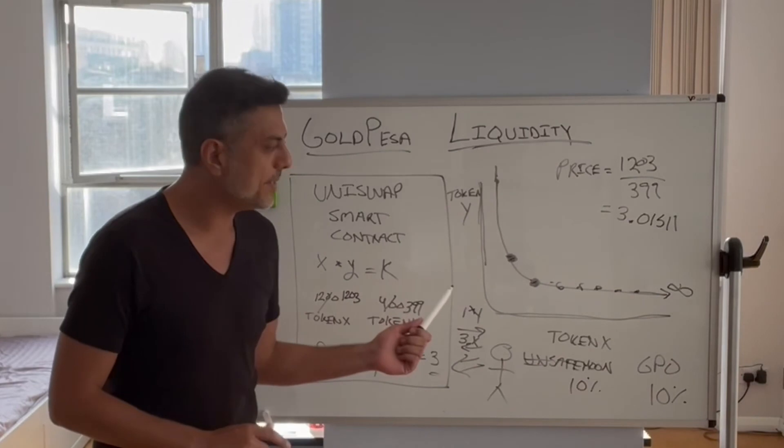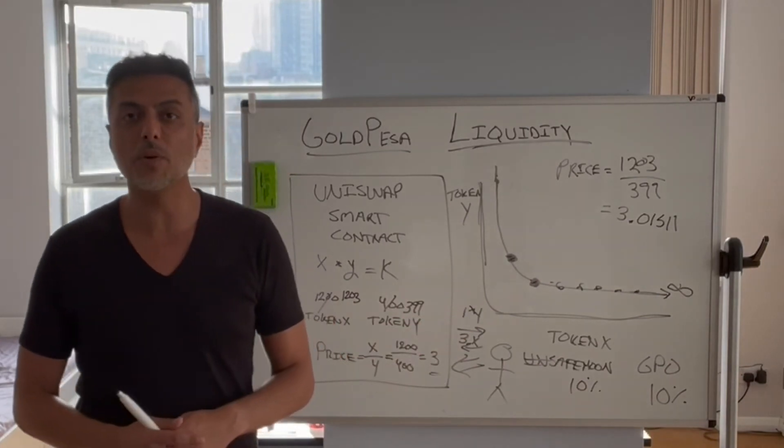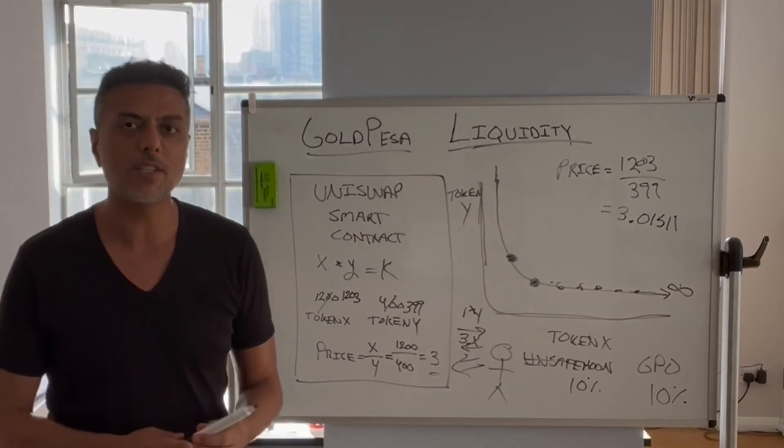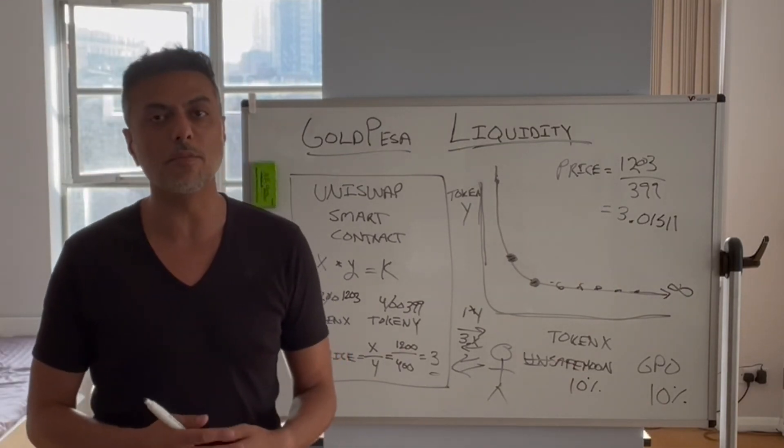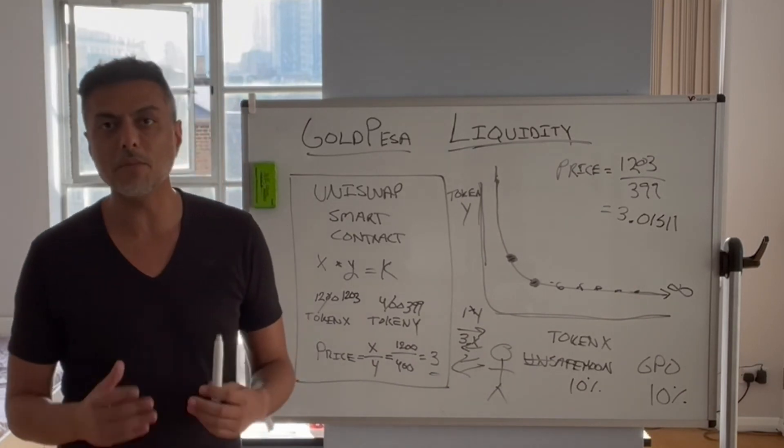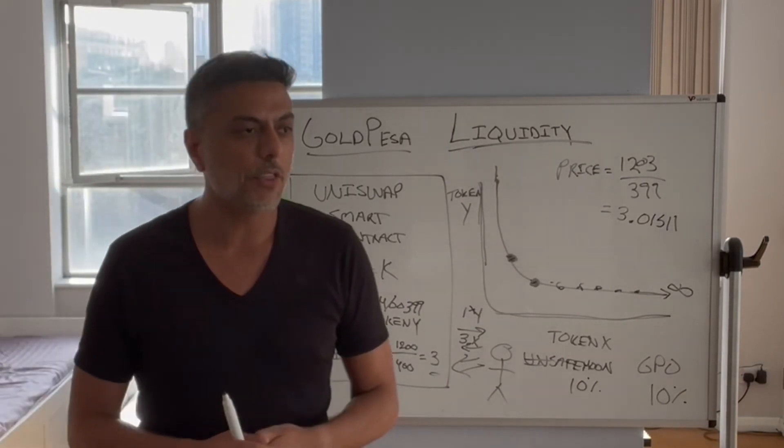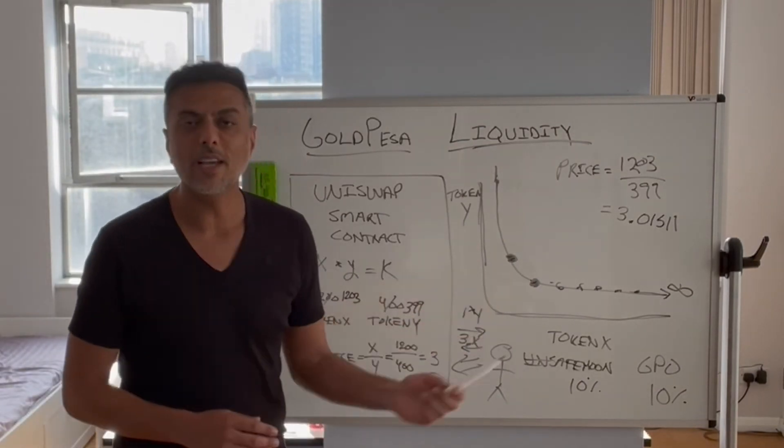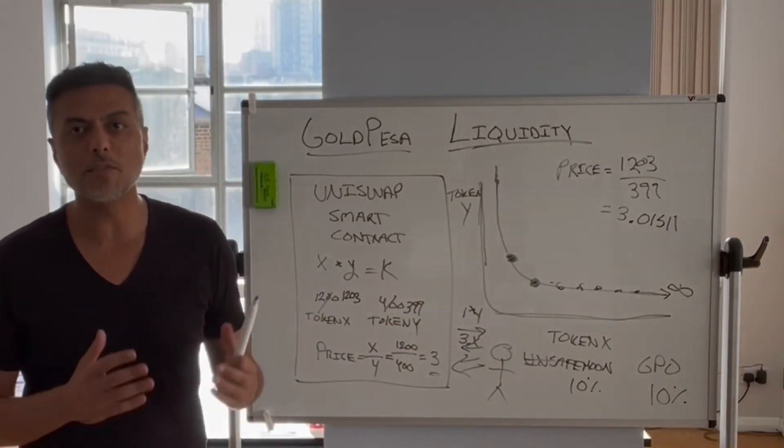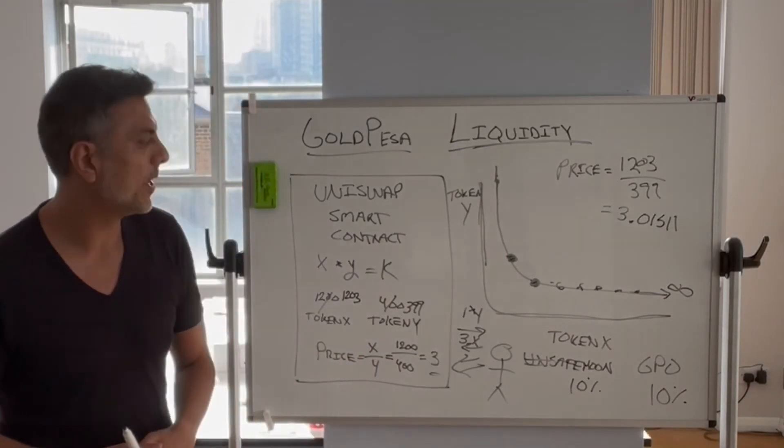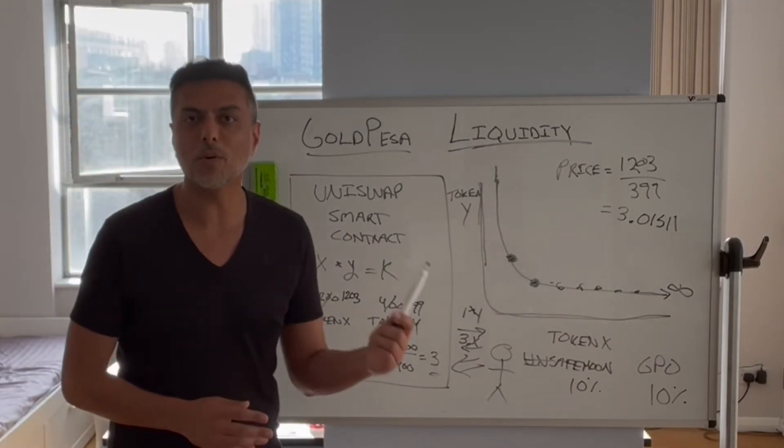So this is basically the math behind the version 2 of Uniswap. And this in itself is a great model. But as we were building the tokenomics for goldpesa, we were blessed with something called Uniswap version 3. And this is an absolute game-changer. And in version 3, it allowed us to place liquidity in a concentrated range, which is almost like having leverage. And we'll get into that a little bit in part 4 of this video.